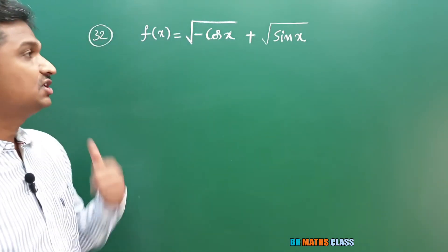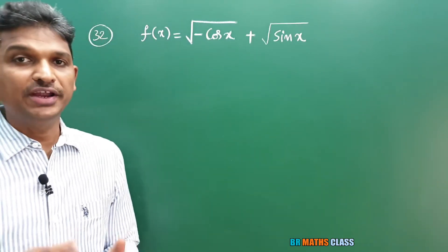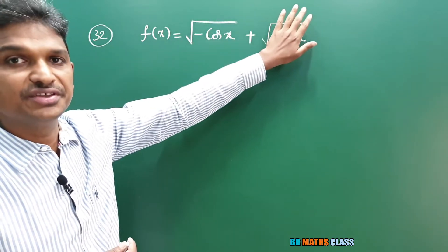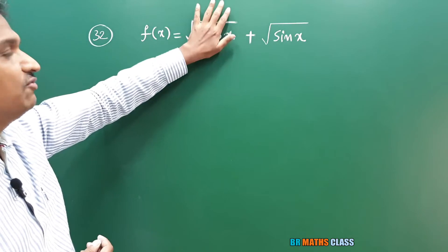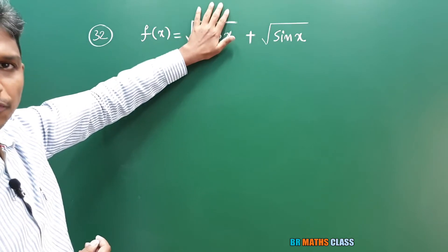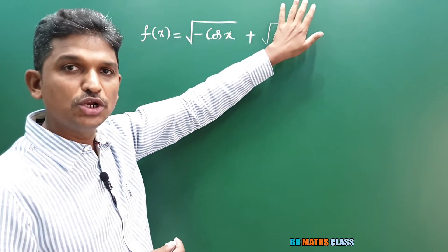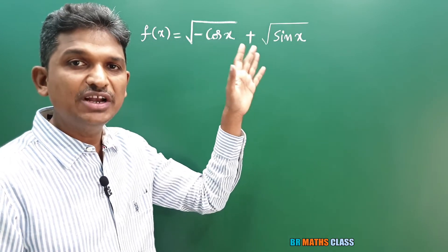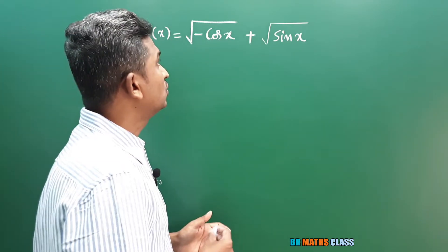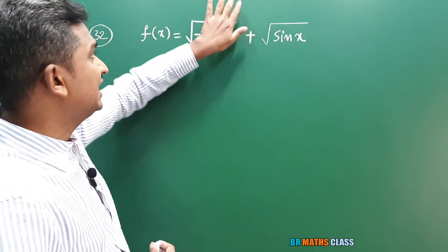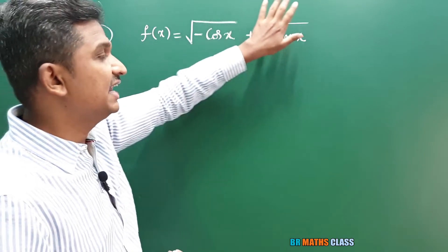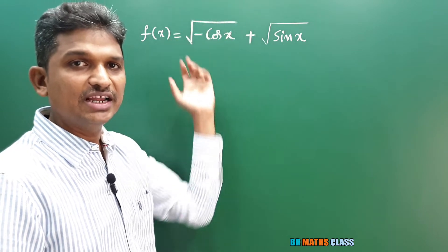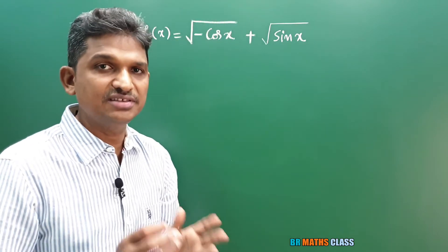Question 32: we need to find the domain of a function that is a sum of two functions. We know that if d1 is the domain of f(x) and d2 is the domain of g(x), then the domain of f(x) + g(x) is d1 ∩ d2. So first I'll calculate the domain of the first function, then the domain of the second function, and finally take their intersection.